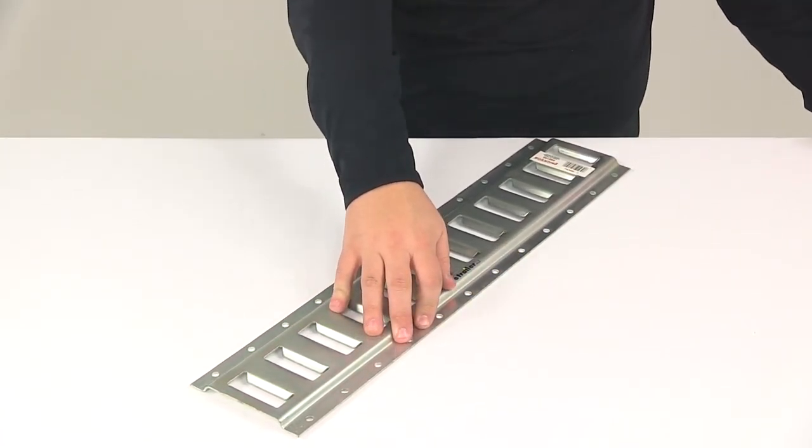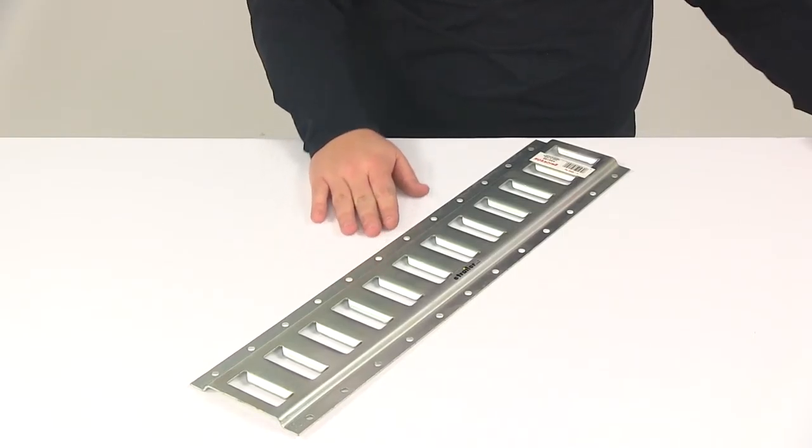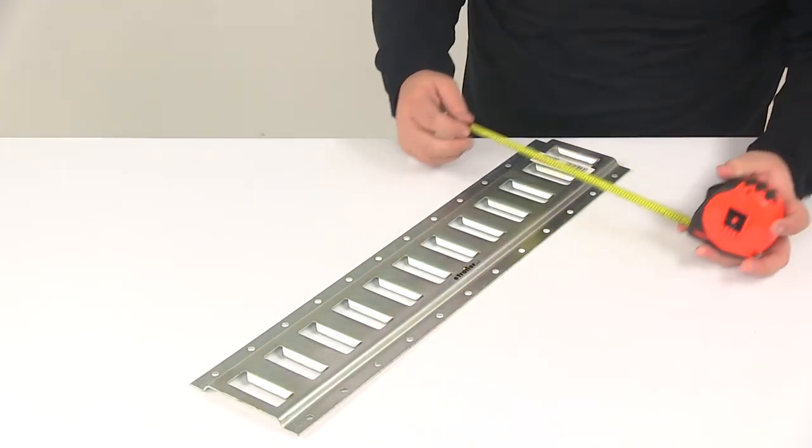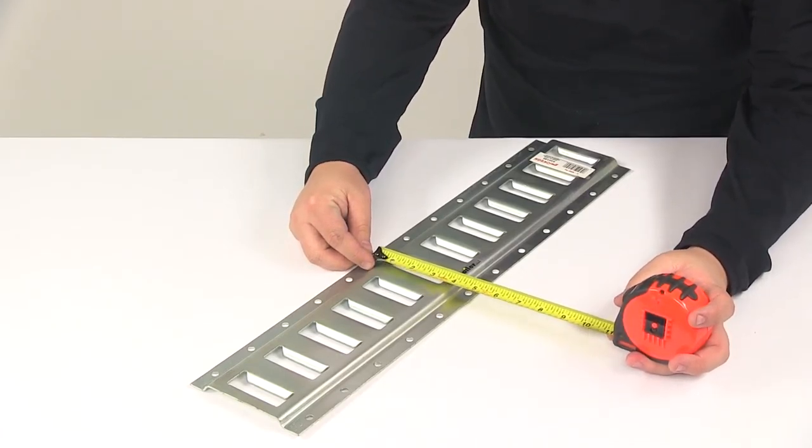On each side we have 12 mounting holes. So that gives us a total of 24 mounting holes. And then the distance between the mounting holes going across measures right on four and a half inches.